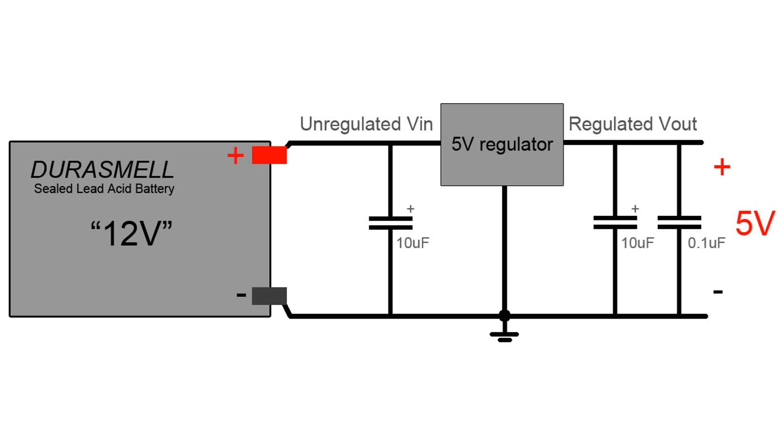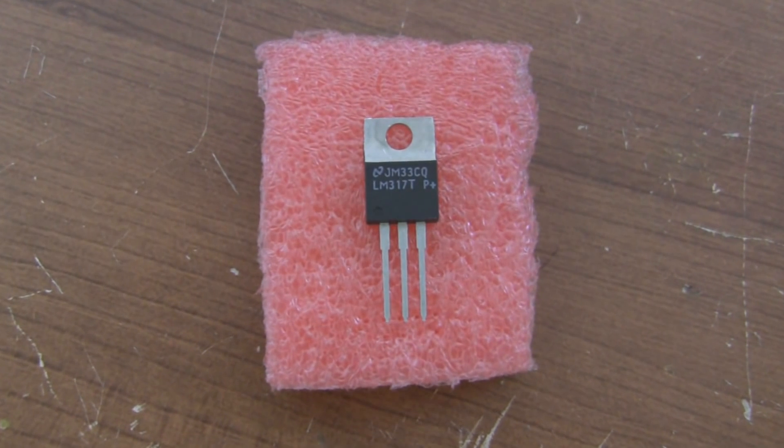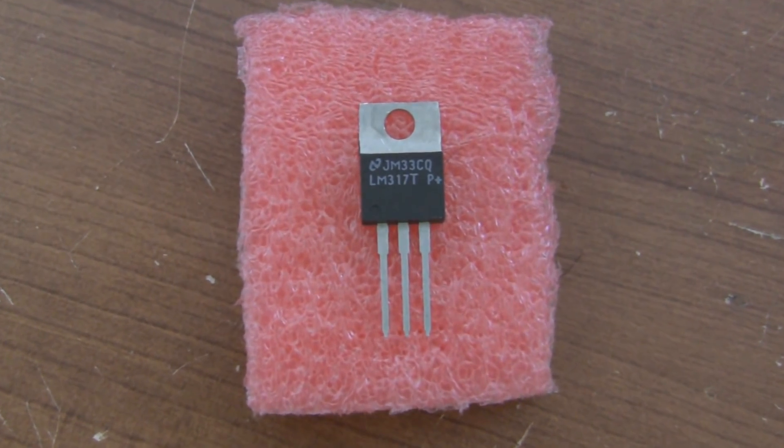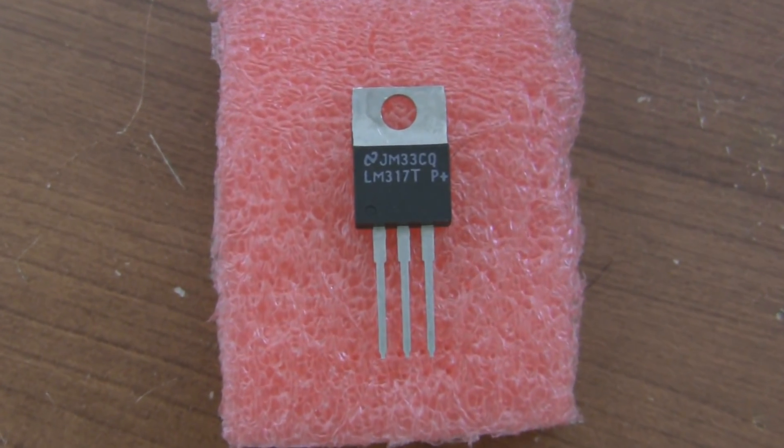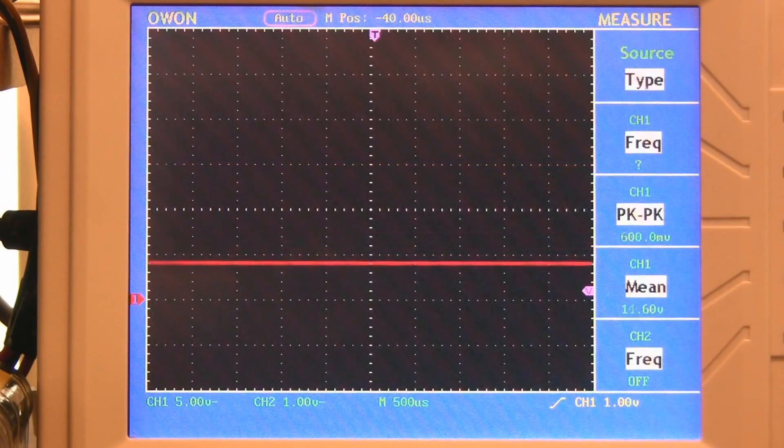For example the popular 7805 is used to create a constant 5 volt supply. In this video I'm going to show you how to use the LM317 adjustable voltage regulator to create any regulated voltage you want all the way up to 37 volts.